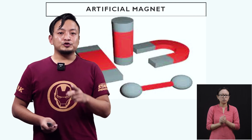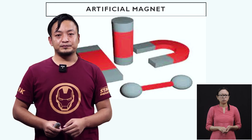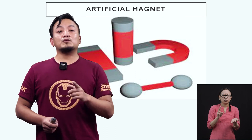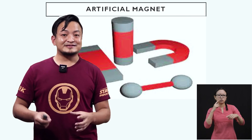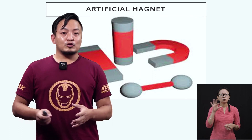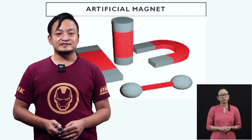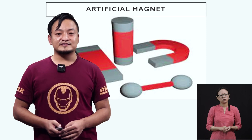From today's class, I'm sure you will be able to differentiate between artificial magnet and natural magnet, and if someone asks you to explain the story of how magnet was discovered, I'm sure you'll be able to tell. Since this is a long chapter, we have divided it into parts. That is all for today. See you in the next class with part 2 of Fun with Magnets. Thank you.